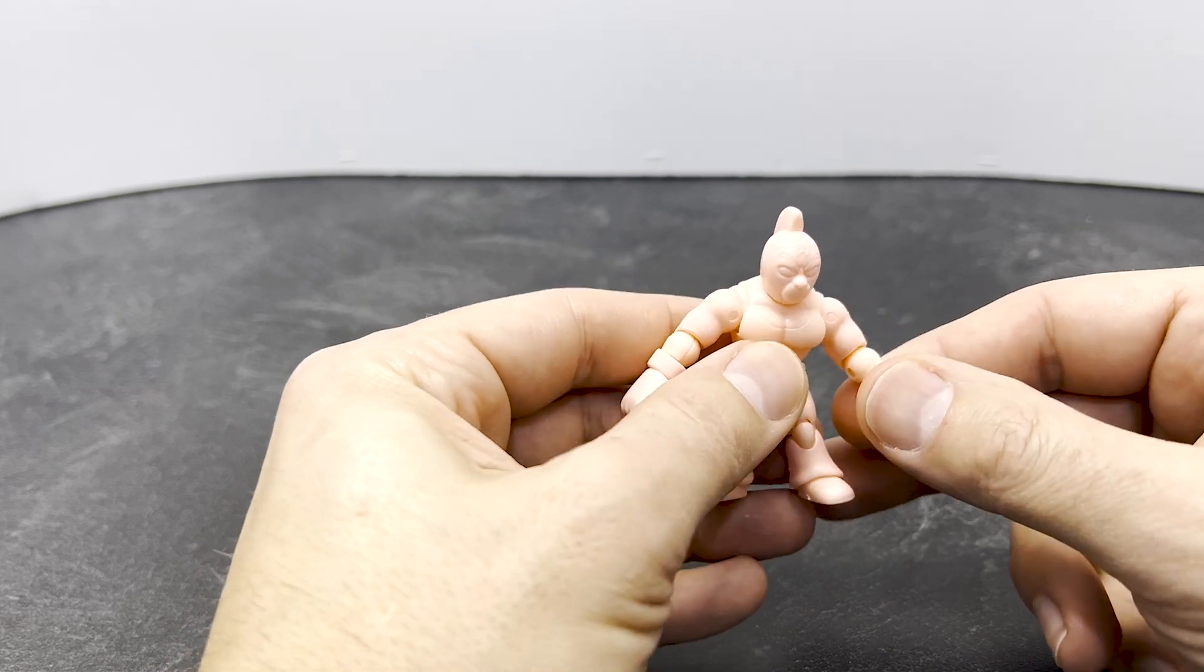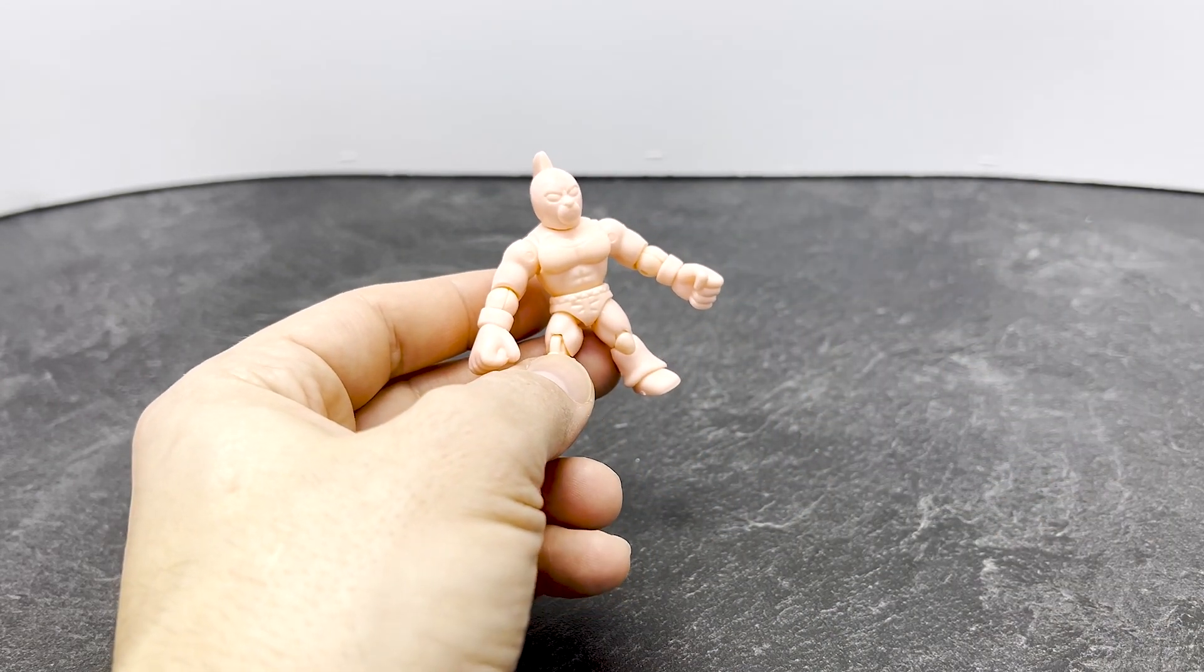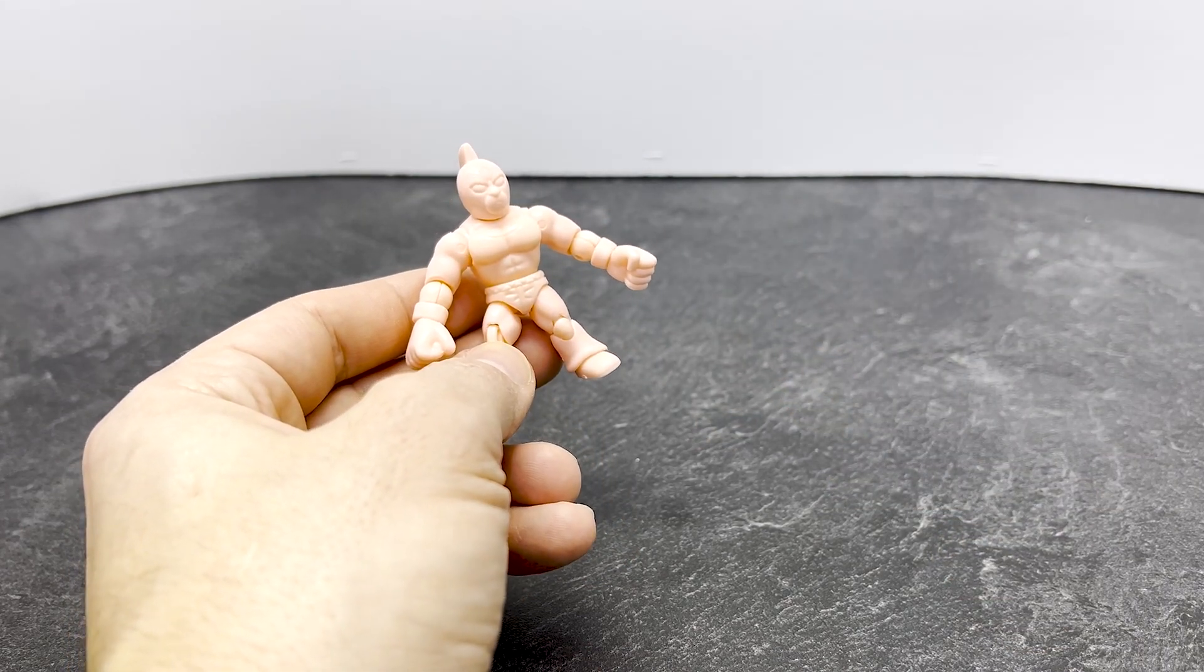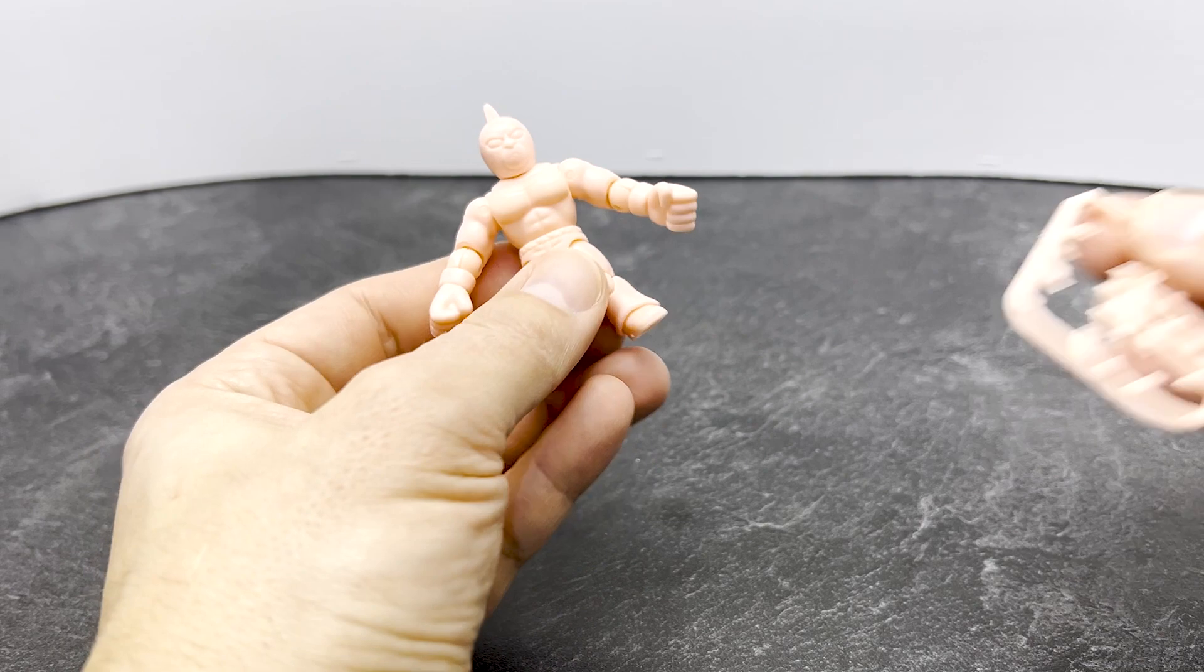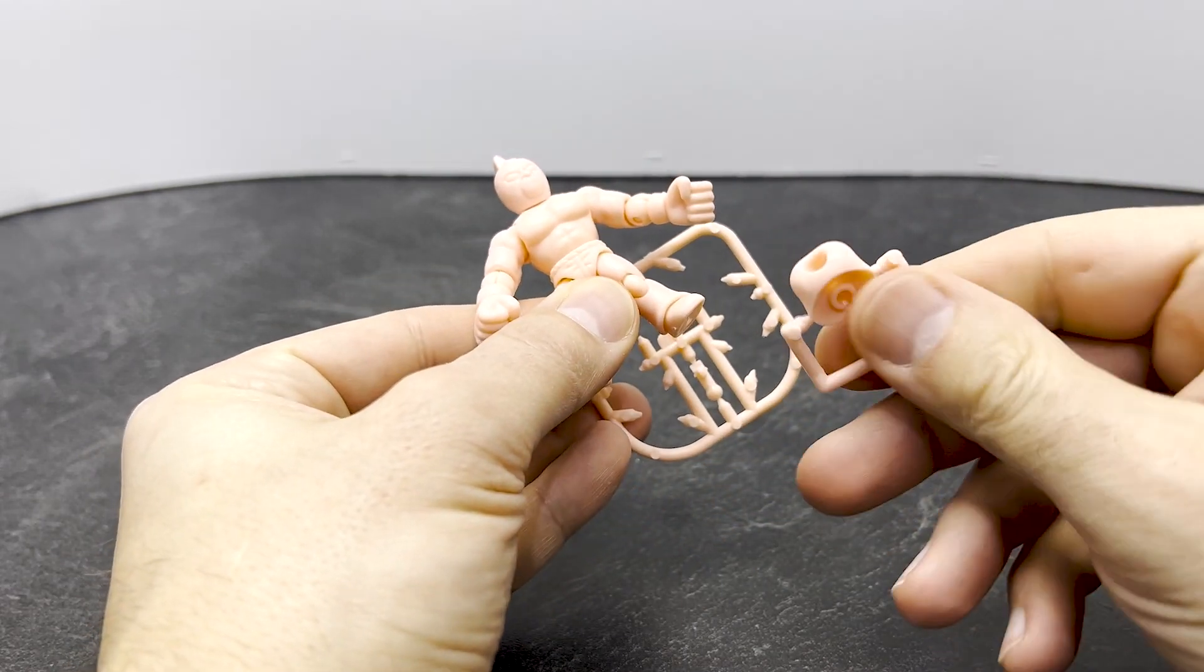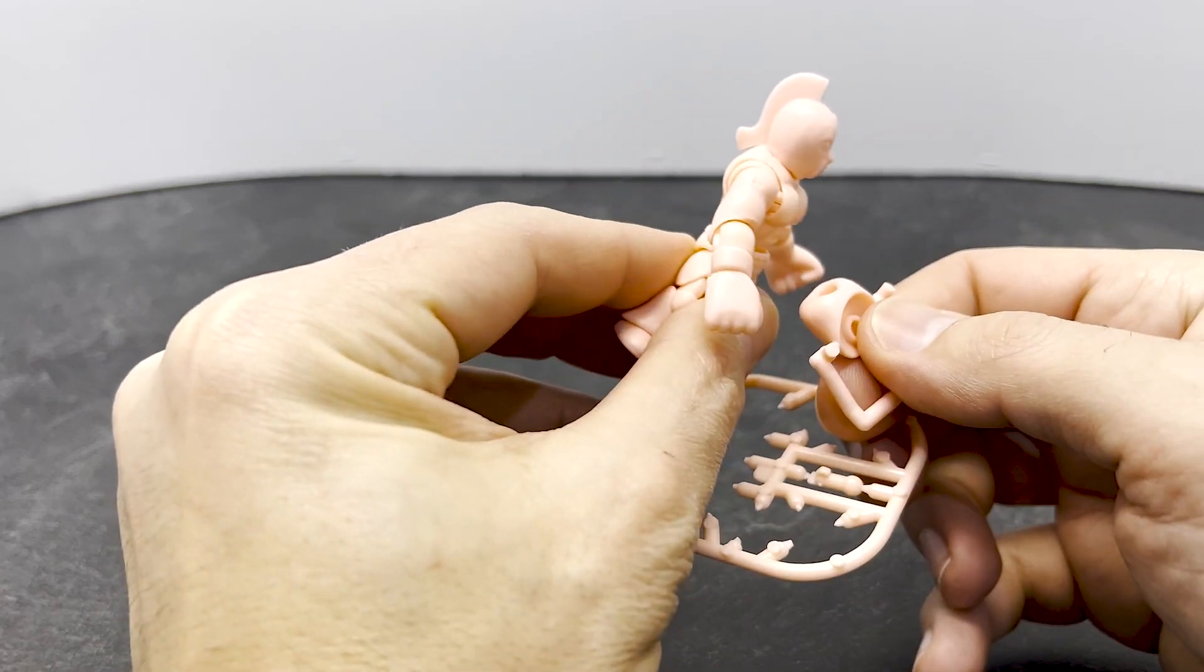That articulation comes mostly with benefits, but with one minor flaw, which we'll get into in a second. I want to talk about the extra parts. We have an extra set of open hands. Also on the sprue, I have an extra joint and extra ab section to sort of give him a crunched overlook.